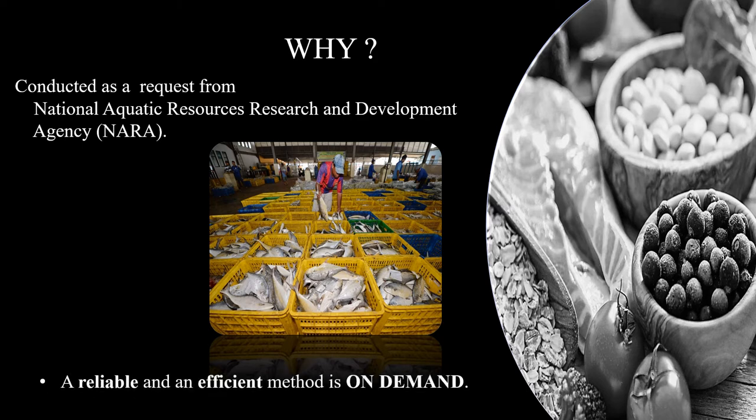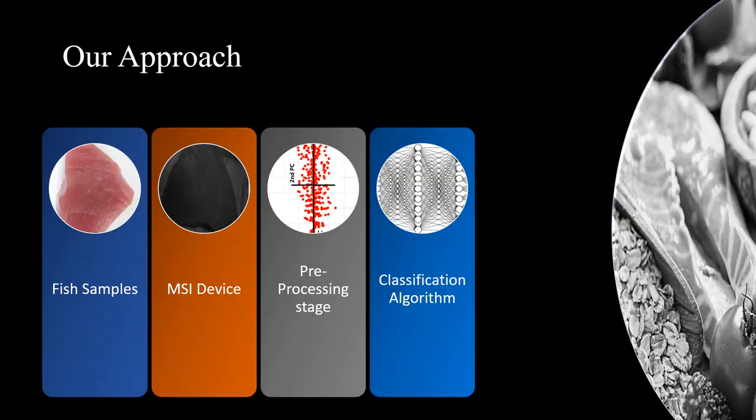Therefore, a reliable and an efficient method is on demand. Now I will discuss our approach. Initially, multispectral images of different fish samples were obtained. Then they were pre-processed by some algorithms. Thereafter, we fed those pre-processed data to several classification algorithms. Eventually, it will produce fish quality grades ranging from A plus to C minus.